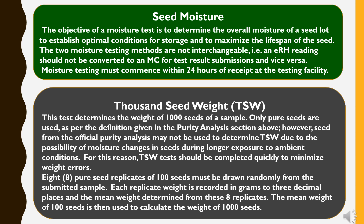After that, 1000 seed weight testing. This test determines the weight of 1000 seeds of a sample. Only pure seeds are used as per the definition given in the purity analysis in ISTA. However, seeds from the official purity analysis may not be used to determine 1000 seed weight due to the possibility of moisture changes during longer exposure to ambient conditions. The 1000 seed weight test should be completed quickly to minimize weight errors. Eight pure seed replicates of 100 seeds must be drawn randomly from the submitted sample. Each replicate weight is recorded in grams to two decimal places and the mean weight determined from these 8 replicates. The mean weight of 100 seeds is then used to calculate the weight of 1000 seeds.